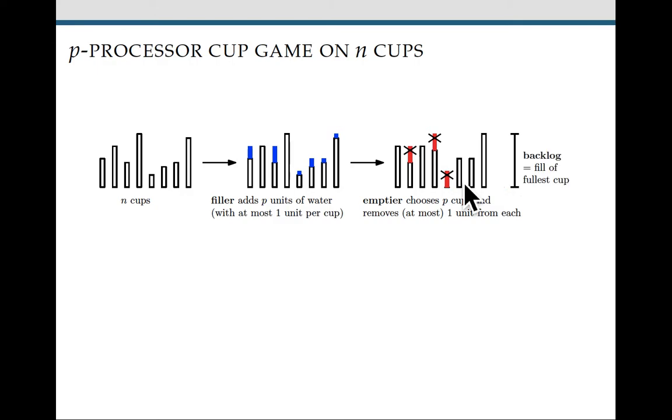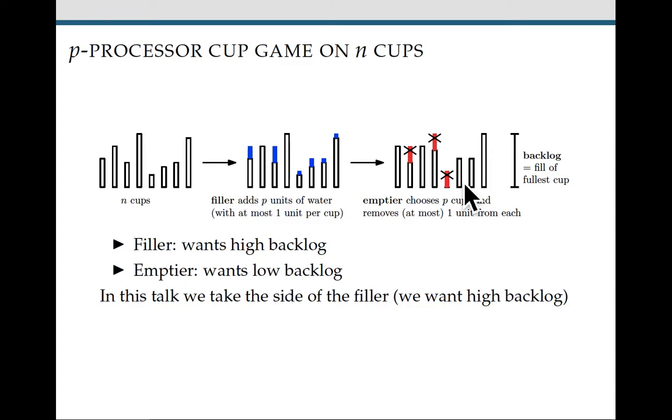The backlog is the fill of the fullest cup and as you can probably guess, the filler wants to get the backlog high and the emptier wants to keep the backlog low. In this talk we're usually going to be taking the side of the filler, so that means we want high backlog.